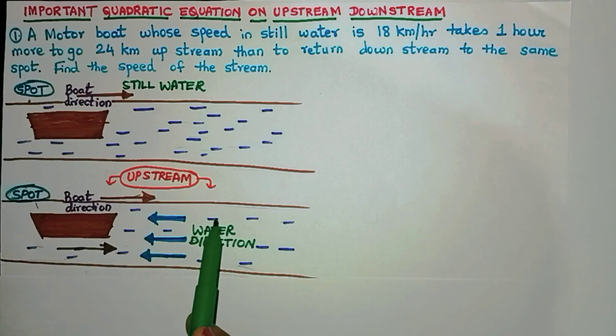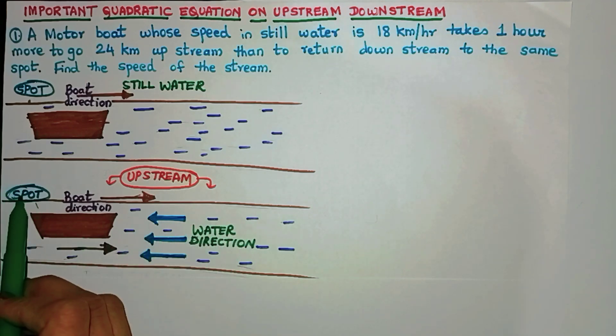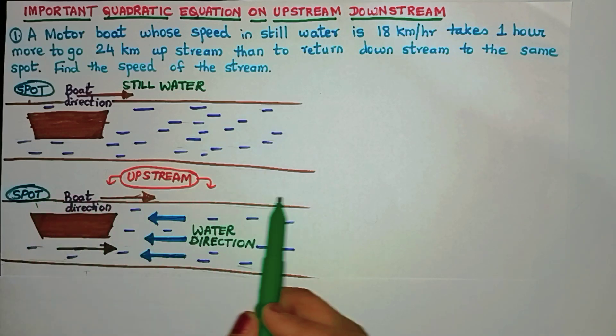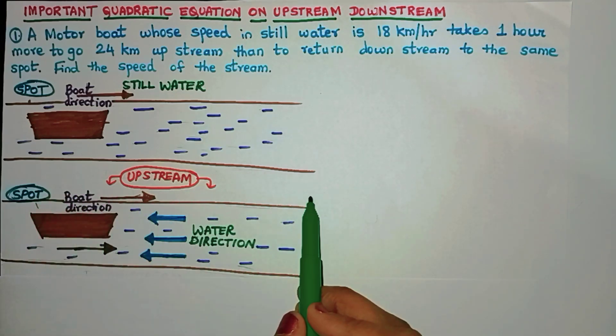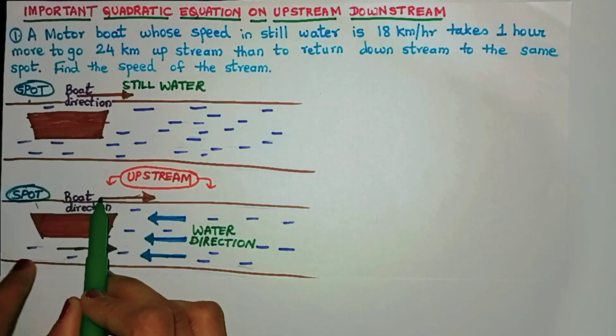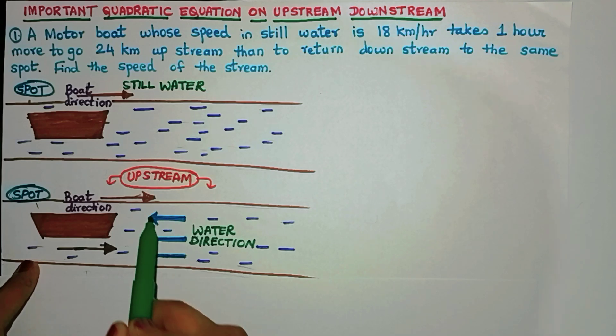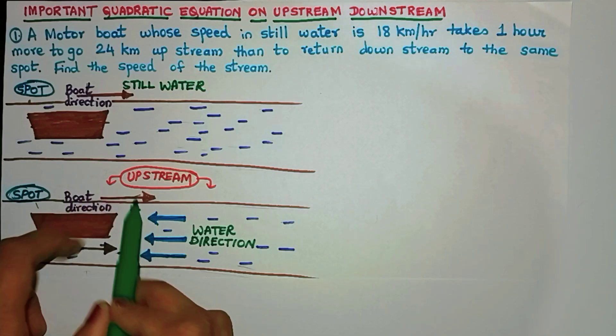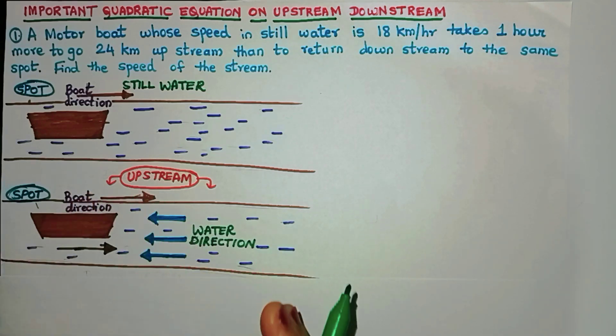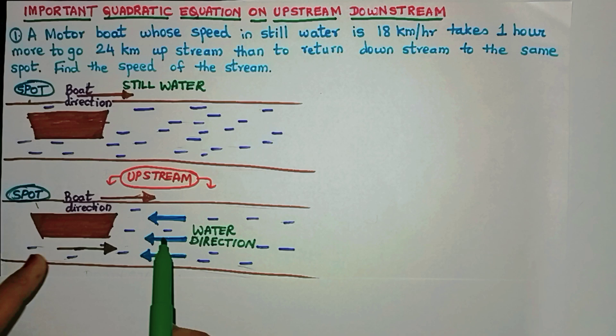Let us suppose that the water is moving in this direction. You can take either direction. The boat starts from this spot and has to go 24 kilometers this way. Did you see this is the direction of the boat and this is the direction of the water. Notice that both directions are opposite to one another. This is known as upstream, when the boat direction and water direction are opposite to one another.